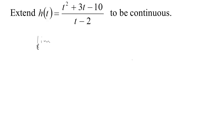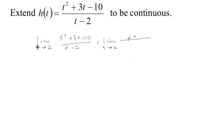What we can do, since the function is just not defined at two, is we can think about the limit as t tends to two of our function. To find that limit we can factor: if we use t plus five and t minus two, all over t minus two, our function is much simpler. We just have the limit as t tends to two of t plus five, which is seven.